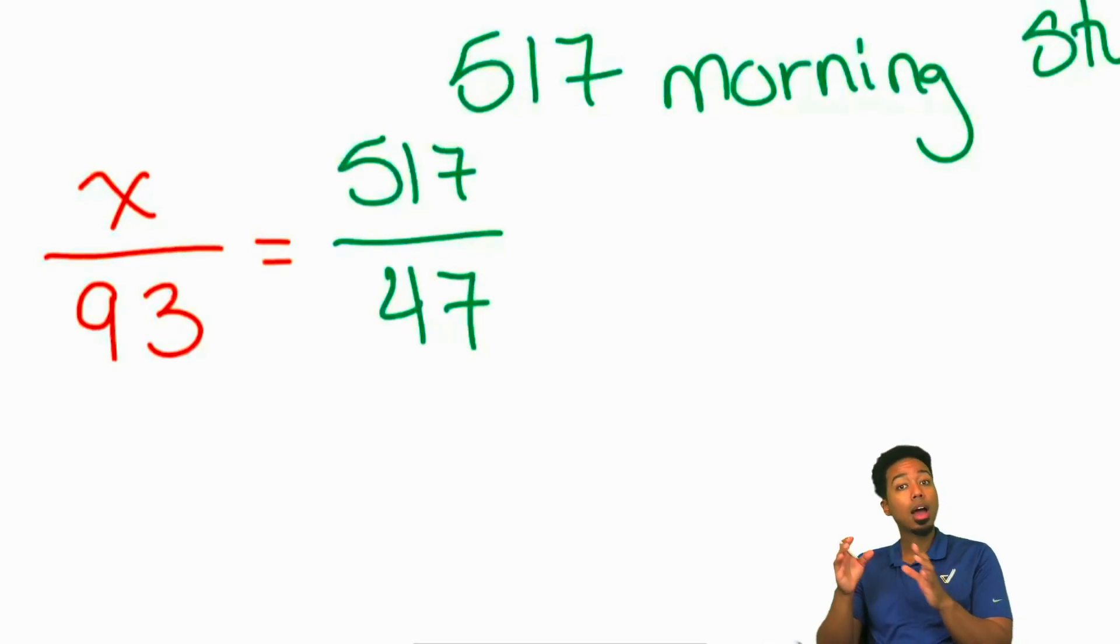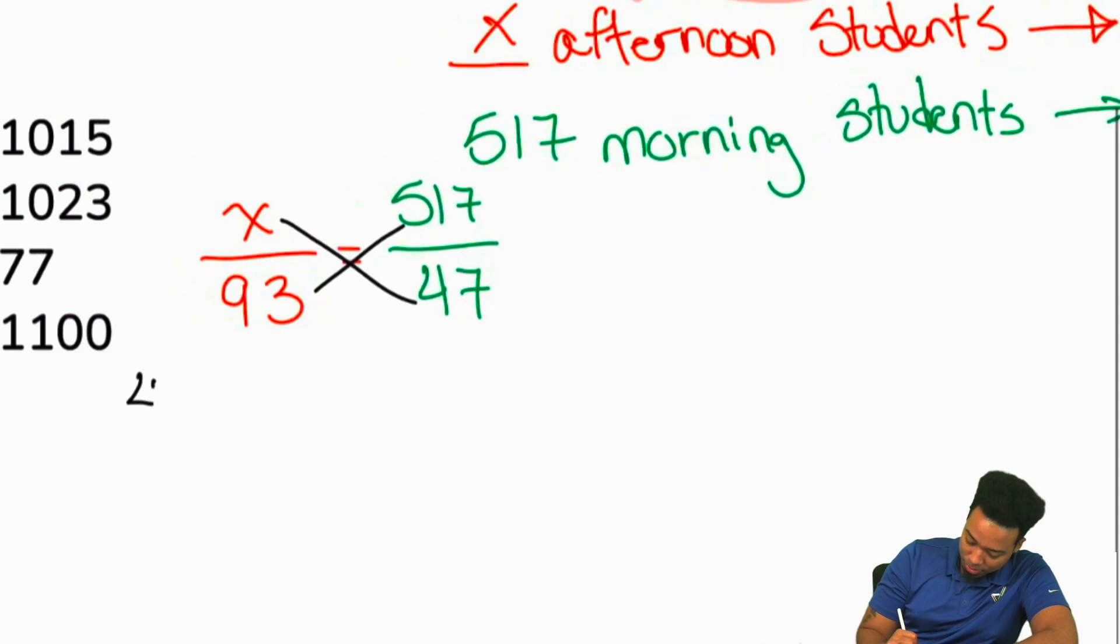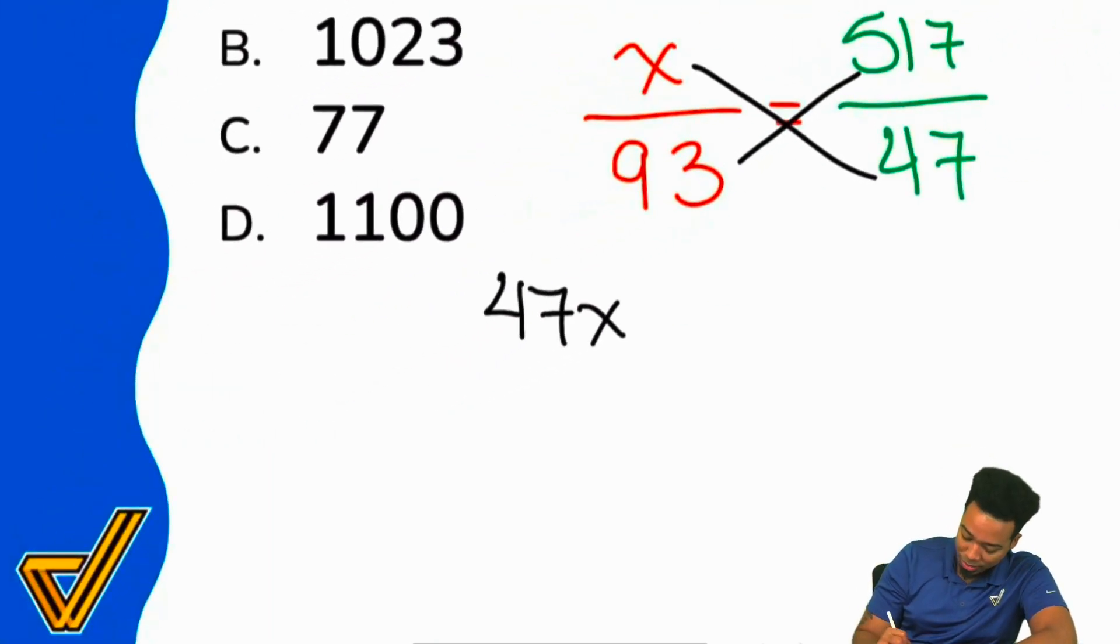Here's the thing party people. I'm going to show you the straight up way because only three people, only three students here saw that there was a simplification that you can make. Out of 103 people, that still leaves almost 98% of the students that didn't quite see the simplification. So let's pretend that none of us saw it. We're going to cross multiply and divide like normal, and I'm going to show you how to work through this even if the numbers are big. Just work through it by trusting your gut. So x multiplied by 47, that's going to be 47x. And now we have to go ahead and multiply 517 by 93.